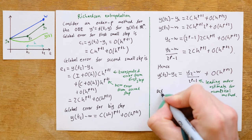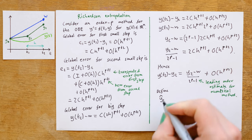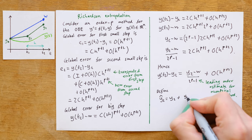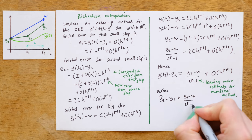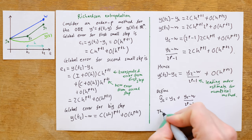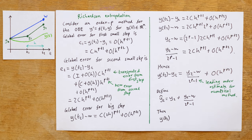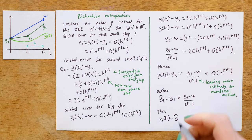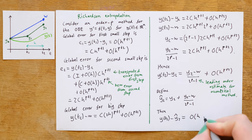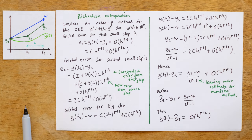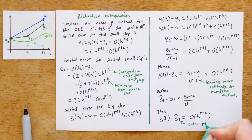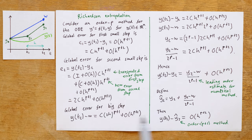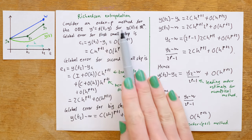We can go further with Richardson extrapolation. Let's define y2-hat to be equal to y2 plus the quantity y2 minus w over 2 to the p minus 1. We can show that y of t2 minus y2-hat is equal to O of h to the p plus 2, and hence y2-hat is an order p plus 1 method. So Richardson extrapolation also allows us to construct a method of one higher order than we started with, which can be a useful way to improve accuracy.